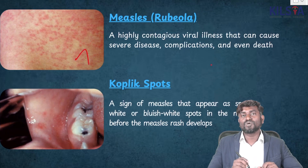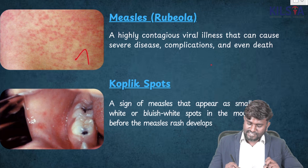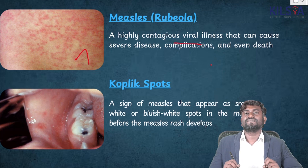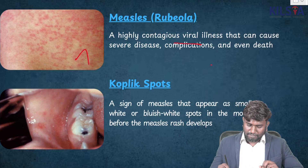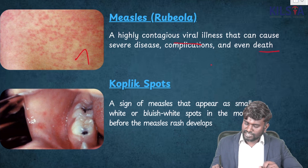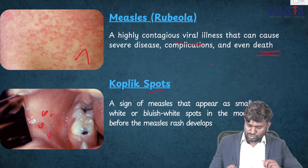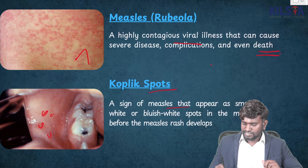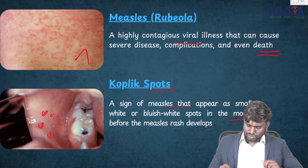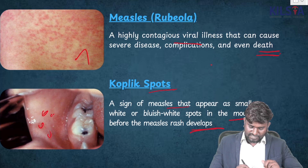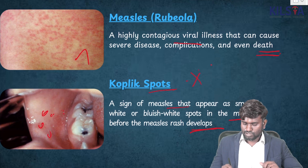This image is going to be Measles — also called Rubeola. It is a highly contagious viral illness which can cause severe disease and complications, and in some cases can lead to death. These spots are called Koplik spots — the sign of Measles that appears as small bluish-white spots on the mouth, especially before the appearance of the Measles rash.